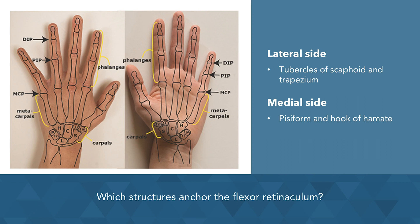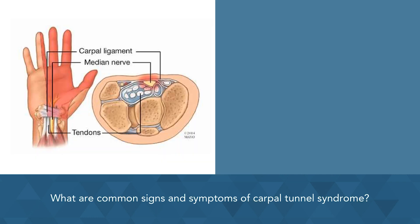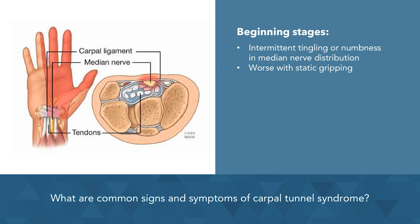Let's look at some common signs and symptoms of carpal tunnel syndrome. In the beginning stages, we see intermittent tingling or numbness in the median nerve distribution — we'll talk more about what that looks like shortly. Symptoms are worse with static gripping.